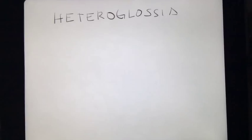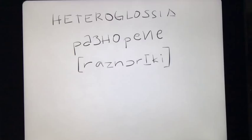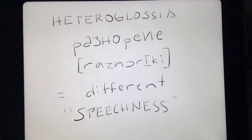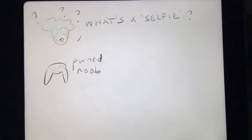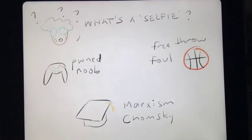Heteroglosia originated from the Russian raznoriki, which literally means different speechness. This refers to the different types of speech within the same language, such as the language of younger and older generations, or different social groups, such as gamers, athletes, and academics.